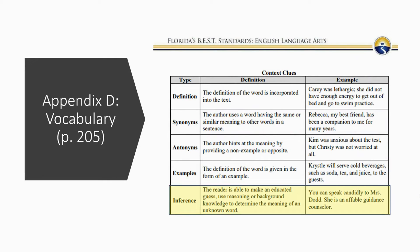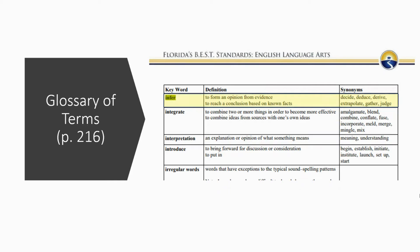If we head to the vocabulary appendix on page 205, you'll see under the context clues subheading the type of vocabulary for inference: the reader is able to make an educated guess, use reasoning or background knowledge to determine the meaning of an unknown word. And there is an example there for us as well. If we head into the glossary of terms on page 216 of your manual, you'll see the keyword infer means to form an opinion from evidence, to reach a conclusion based on known facts. They also provide synonyms: decide, deduce, derive, extrapolate, gather, and judge.